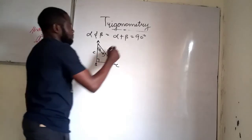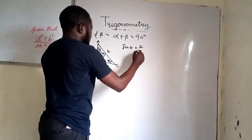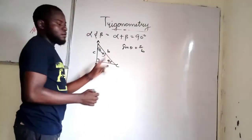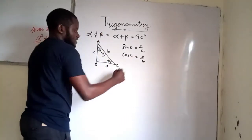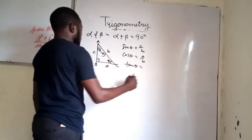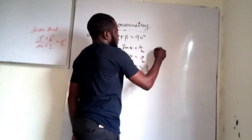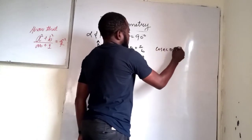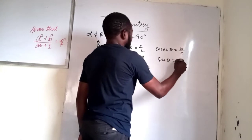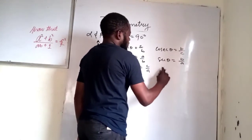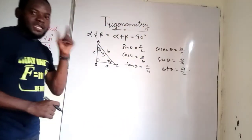Let us find the trig ratios for angle theta. Sine of theta equals opposite over hypotenuse. Cosine of theta equals adjacent over hypotenuse. Tangent of theta equals opposite over adjacent. The cosecant of theta equals B over C, the secant of theta equals B over A, and the cotangent of theta equals A over C.